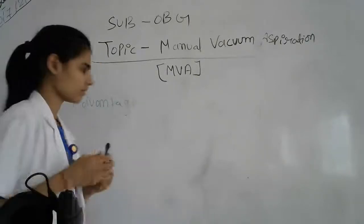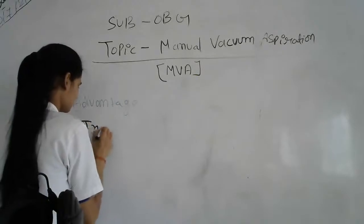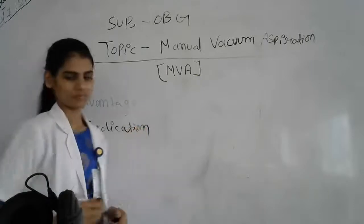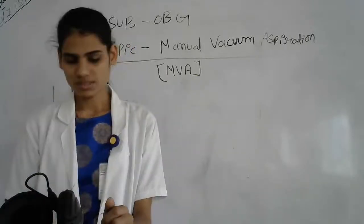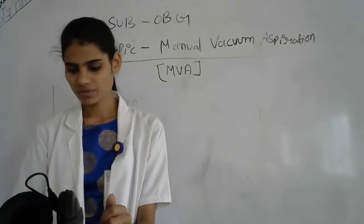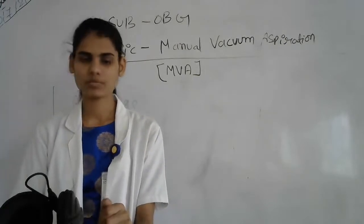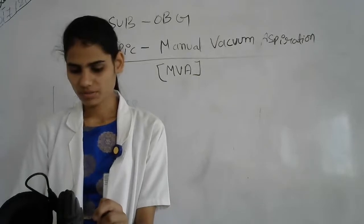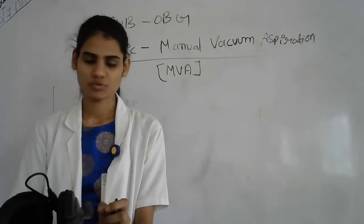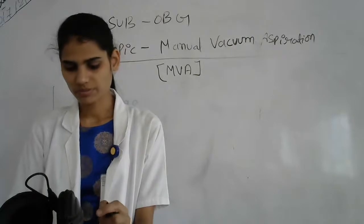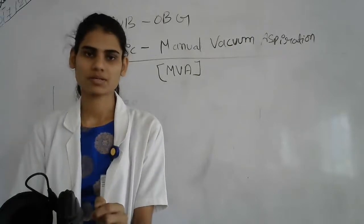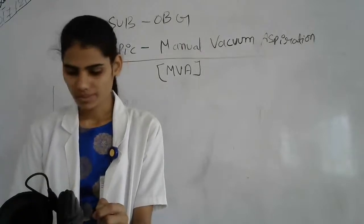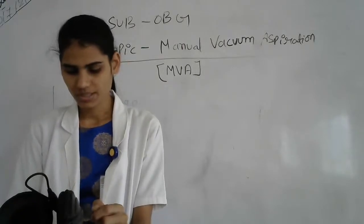The indications of manual vacuum aspiration: First is the treatment of incomplete abortion under general anesthesia up to 12 weeks. The manual vacuum aspiration procedure is also done for first trimester abnormal menstrual regulation when indicated.